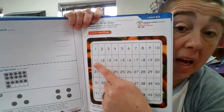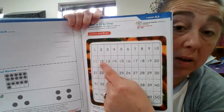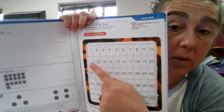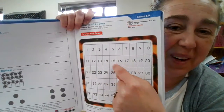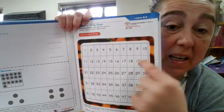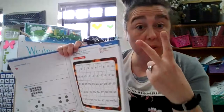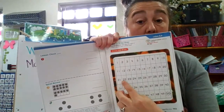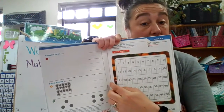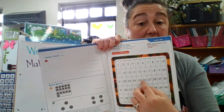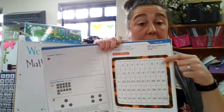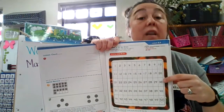Now, 11 would be 10 and one more: 1, 2, 3, 4, 5, 6, 7, 8, 9 in our next 10. So two 10s would be what? Well, 10, 20. And then we go into 21, 22, 23, 24 — we do that same thing again: 1, 2, 3, 4, 5, 6, 7, 8, 9, and we do our next group of 10: 10, 20, 30.